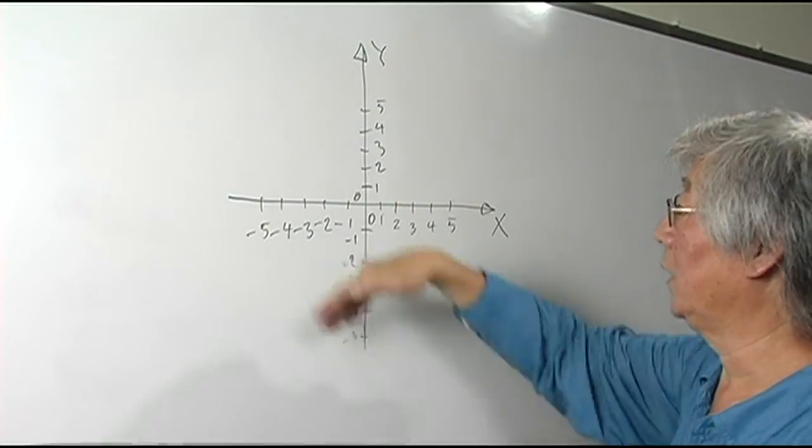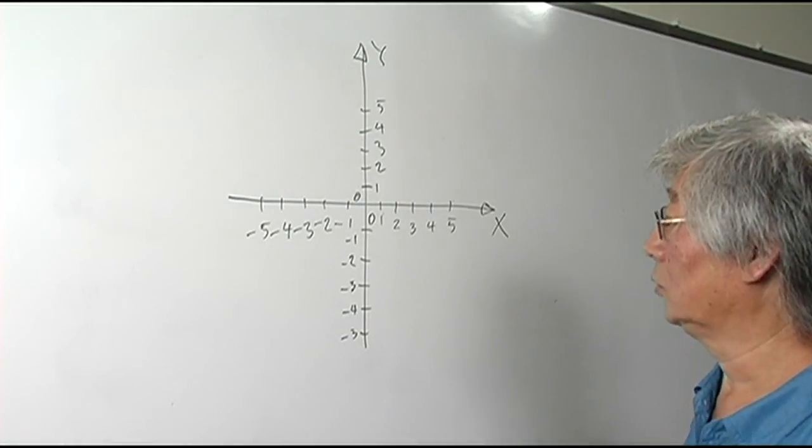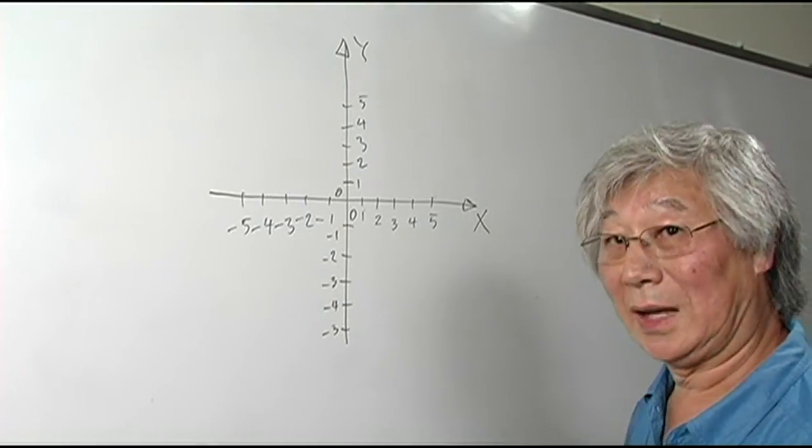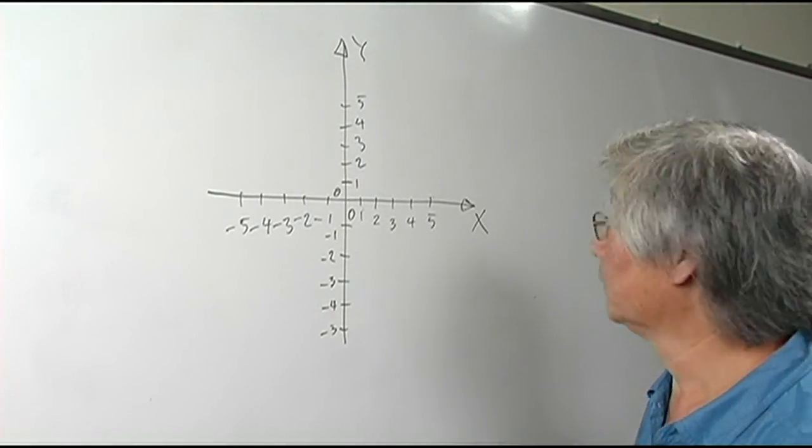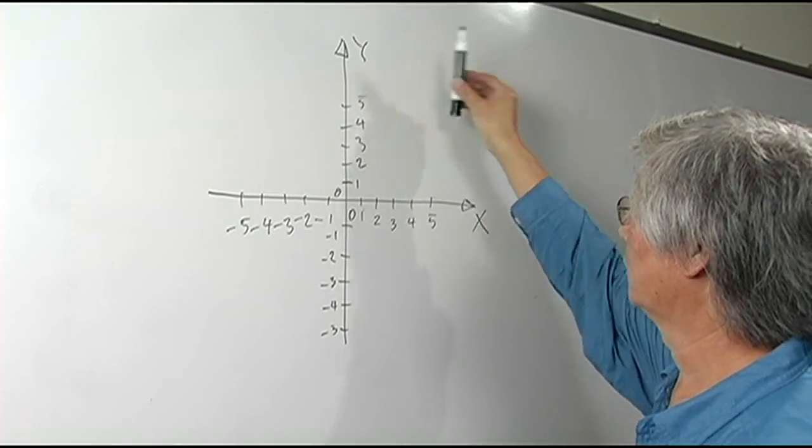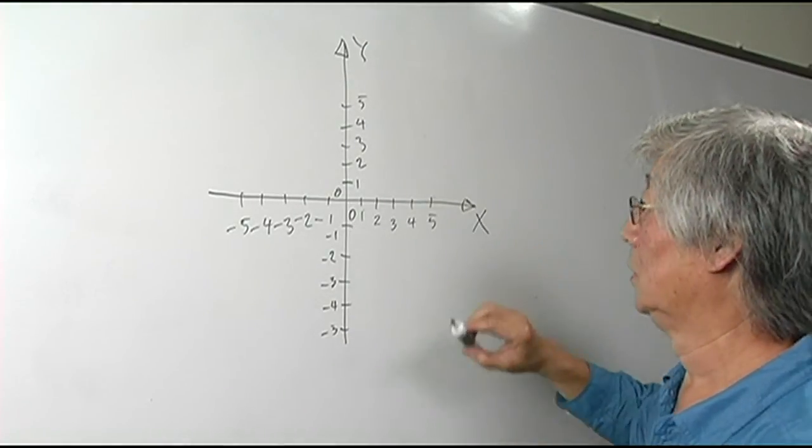This rectangular coordinate plane is sometimes referred to as the Cartesian coordinate system, and we can divide this plane into four quadrants.